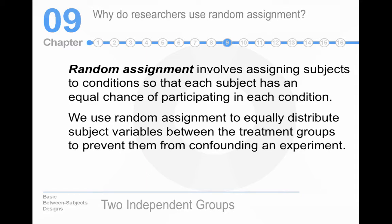The importance of random assignment. I cannot understate this, or overstate it, I should say. Random assignment allows you to achieve group equivalence in between subjects, between groups designs. You assign subjects to conditions so that they have an equal chance of participating in either of the conditions. Departing from random assignment has huge internal validity issues.